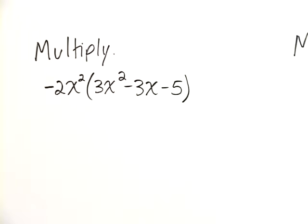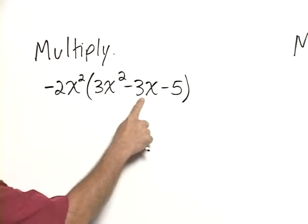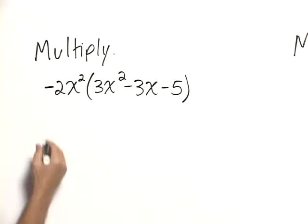Multiply negative 2x squared times the quantity 3x squared minus 3x minus 5. We need to multiply negative 2x squared times each term in the parentheses.